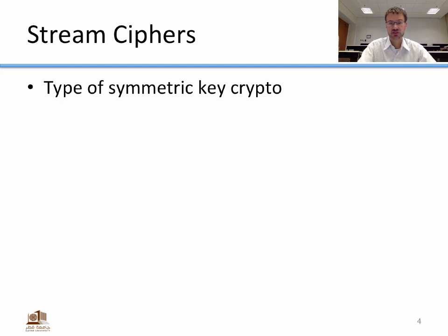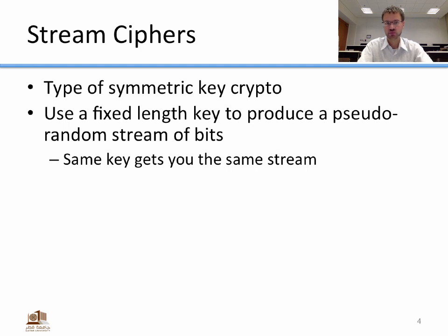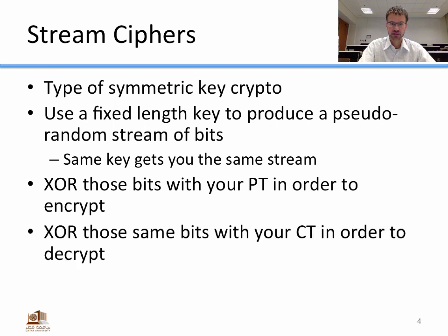Stream ciphers are a type of symmetric key crypto. They use a fixed length key to produce a pseudo-random stream of bits — you put in a fixed length key and the algorithm produces a string of ones and zeros, seemingly random. But anytime you use the same key, you get out that same stream. To encrypt or decrypt, you use the exclusive OR operator on those bits with your plain text. Whether encrypting or decrypting, you're just exclusive ORing your message with the bits from the bitstream.